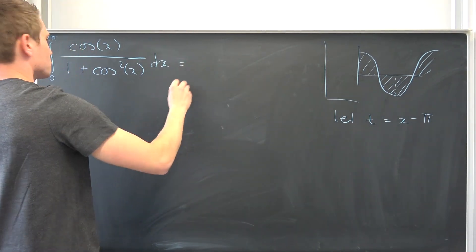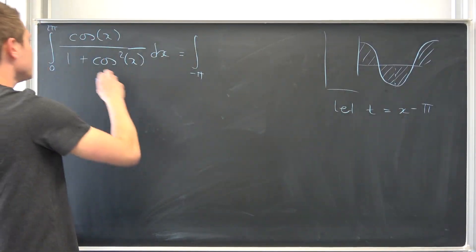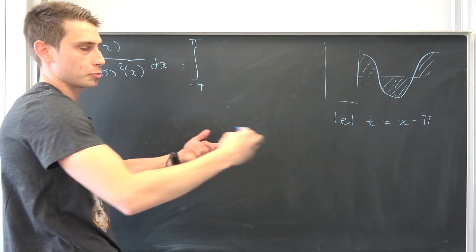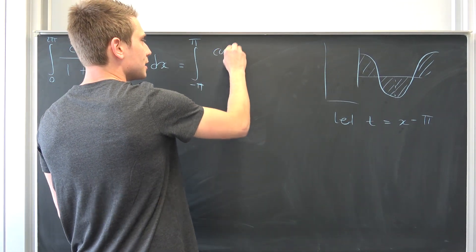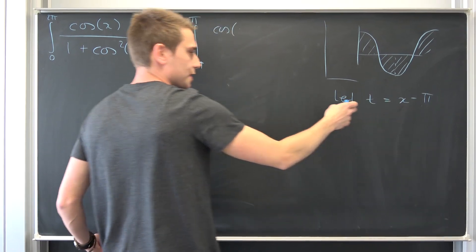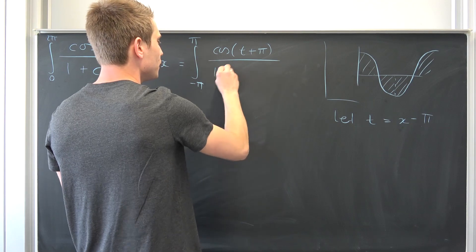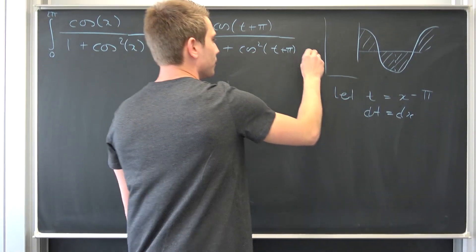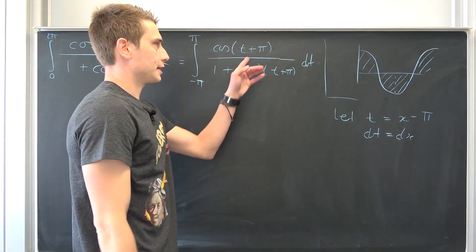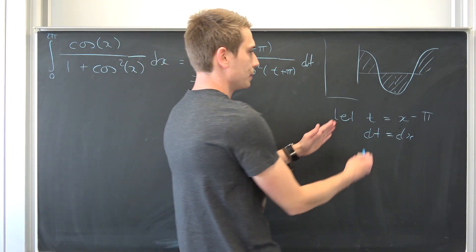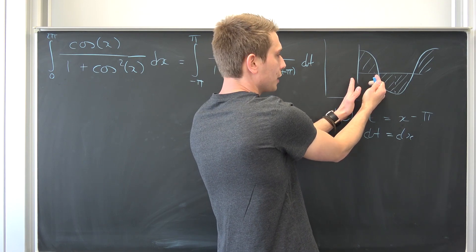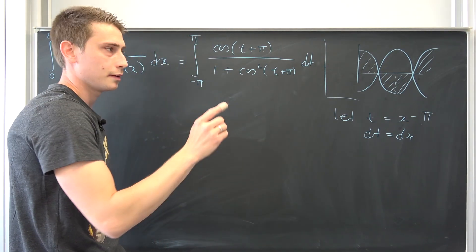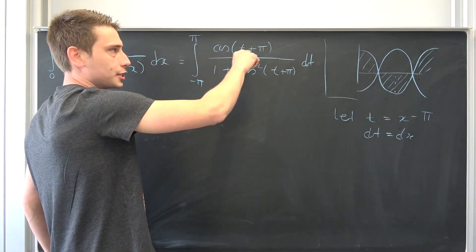That should be okay because I wanted to have a symmetric interval on my integral, meaning we are going to end up with an integral from negative π to π. If you plug 0 in, it gives us negative π; if you plug 2π in, it gives us π. So that's a symmetric integral. We get the cosine of t plus π over 1 plus the cosine squared of t plus π, and dt is nothing but dx. Now cosine of t plus π means we shift our cosine wave π units to the right, and this thing is actually just negative cosine of t.